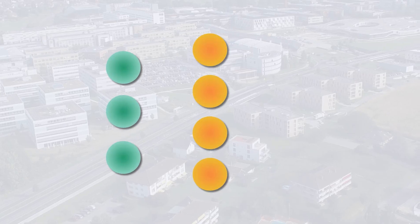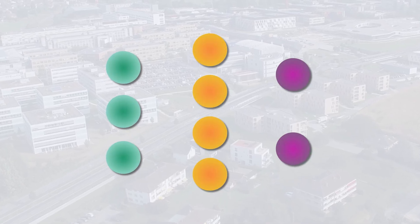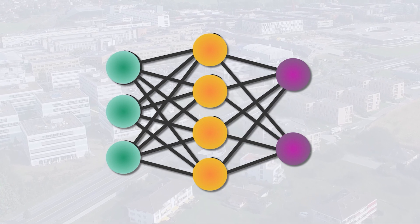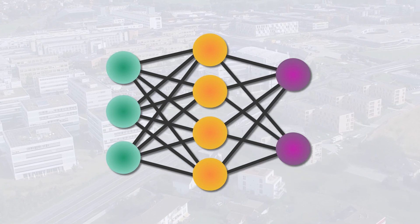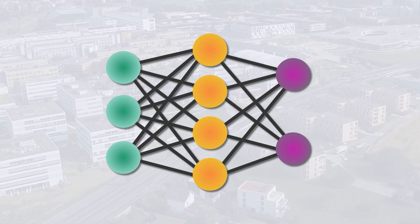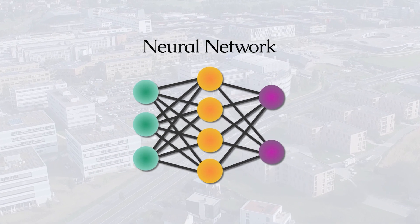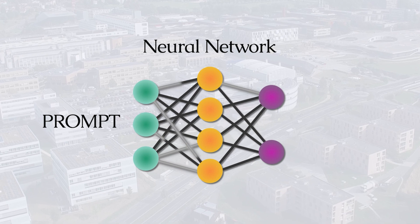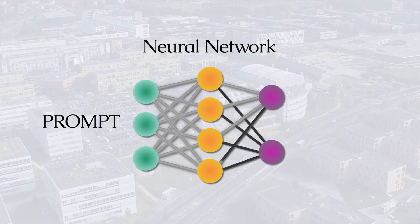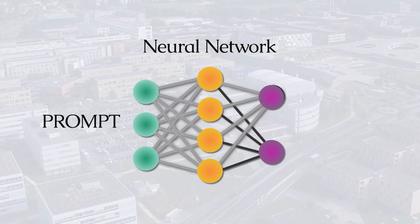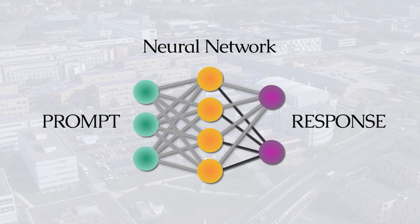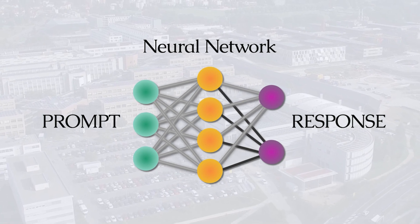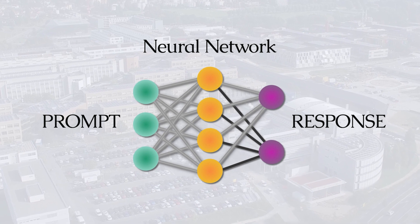The algorithms or rules that make this generator use interconnected information centers known as neurons. The connections between them all create what we know as a neural network. When we give it an input through a question or a prompt, it uses all the information it has been trained on in order to create a response that mimics human behavior, but with way more information than a real human being could really obtain.